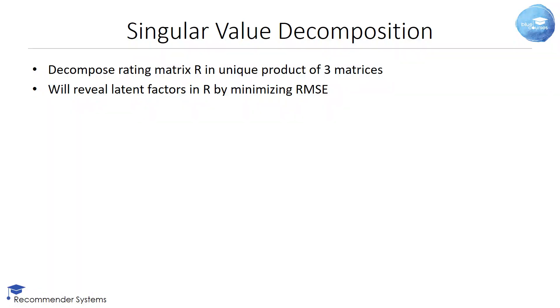The idea of singular value decomposition, or SVD, is to decompose the rating matrix R in the unique product of three matrices. Similar to UV decomposition, the aim is to reveal latent factors in R by again minimizing the root mean squared error, or RMSE.